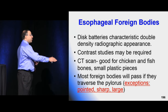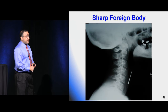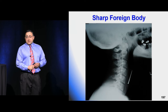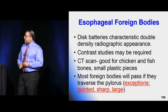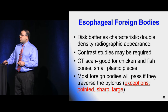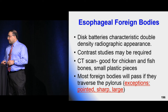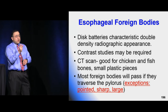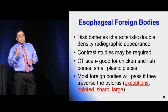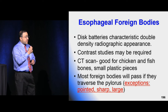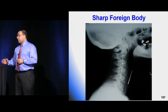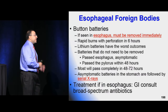Exceptions requiring removal: sharp or pointed objects (which will tear the GI tract), and large objects — if any single dimension exceeds 2-3 cm, it won't pass the pylorus. Objects lodged in the esophagus need to be removed. Otherwise, let it ride and get serial X-rays, or have parents check stool for passage. Button batteries are a special scenario — if stuck in the esophagus, they need to come out right now, as they can leak and erode through the esophagus.